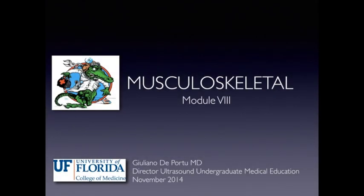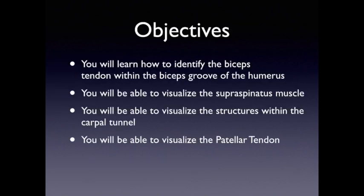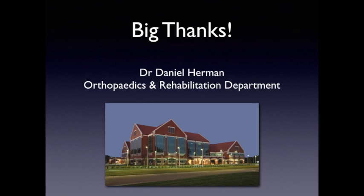Welcome to the University of Florida College of Medicine ultrasound module. This is module number eight. Today we're going to be talking about musculoskeletal ultrasound — we're going to be looking at the tendon of the long head of the biceps, the supraspinatus muscle, structures within the carpal tunnel, and structures in the distal femur and at the patellar tendon. Big thanks to Dr. Daniel Herman from the orthopedics and rehabilitation department, who was great in helping me put this module together for the class.